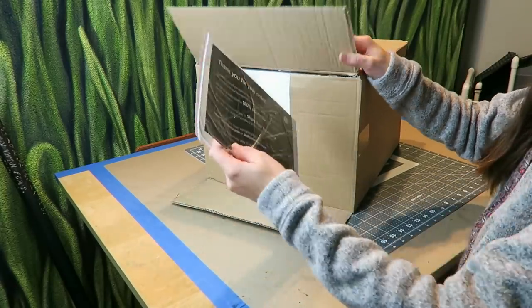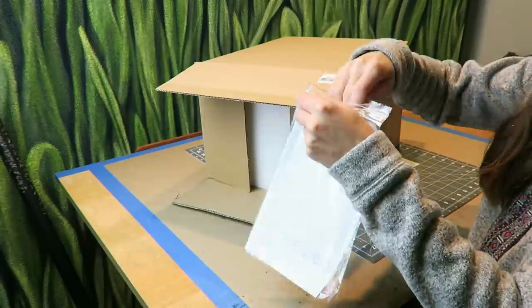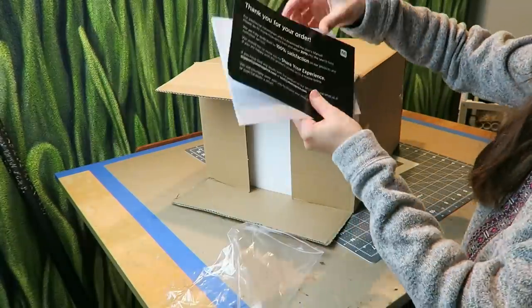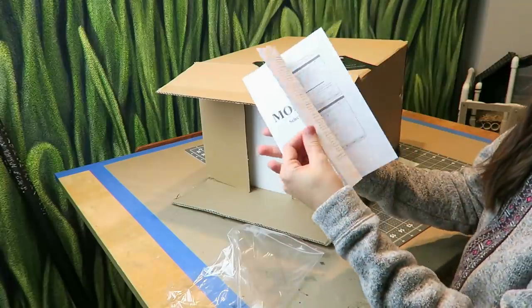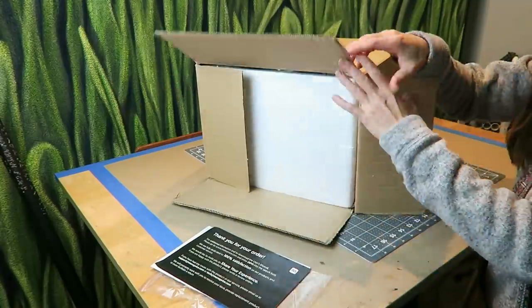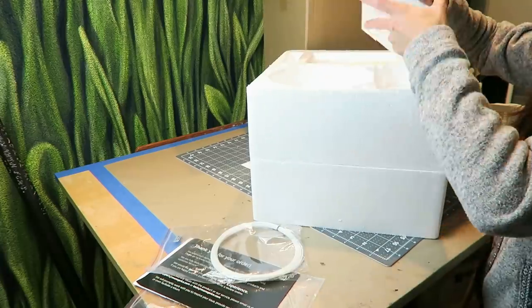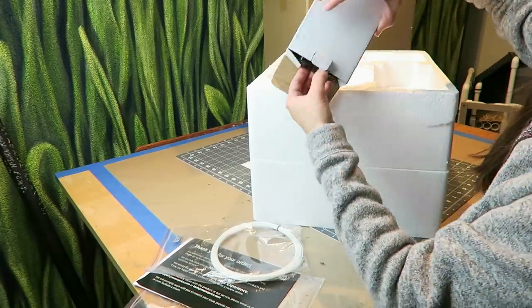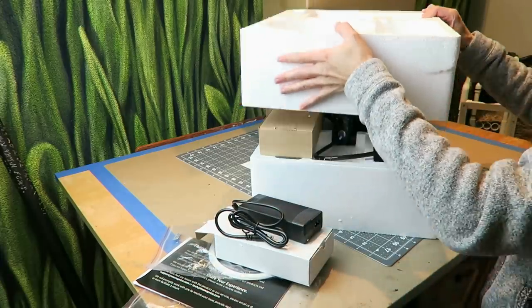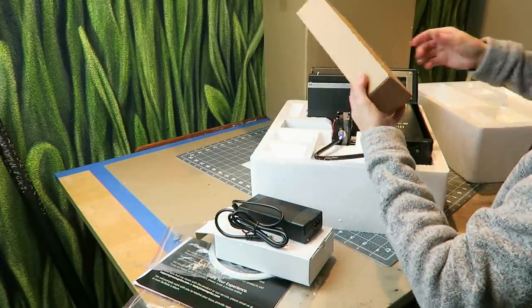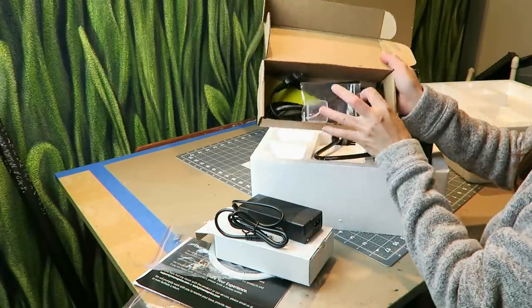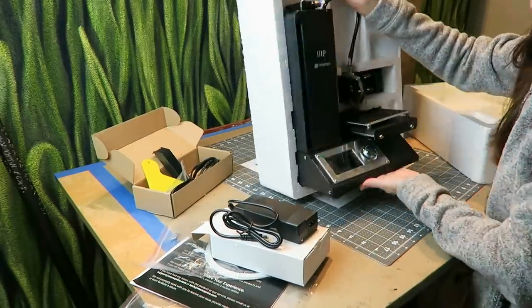Today I'm unboxing and testing out the Monoprice Select Mini 3D Printer Version 2. I bought this on Amazon with the goal of sorting out if, with how far 3D printing technology has come, a low price point printer can hold its own and produce quality results. This was $220 on Amazon. Comes in nice and fast with Prime shipping, and the packaging is excellent.